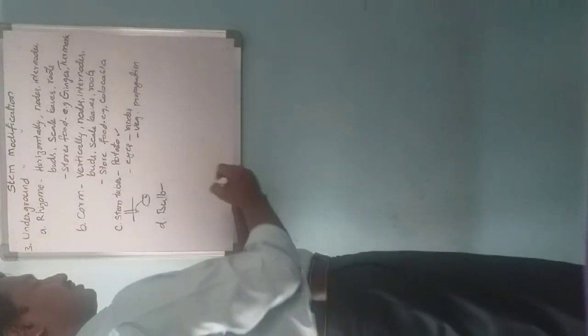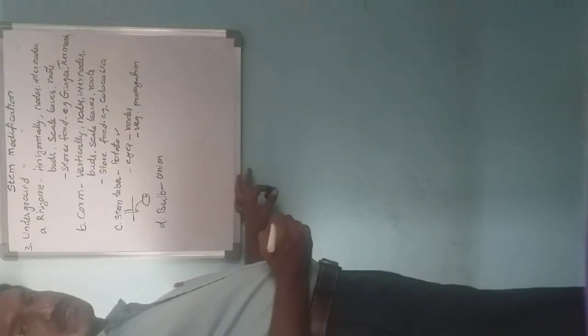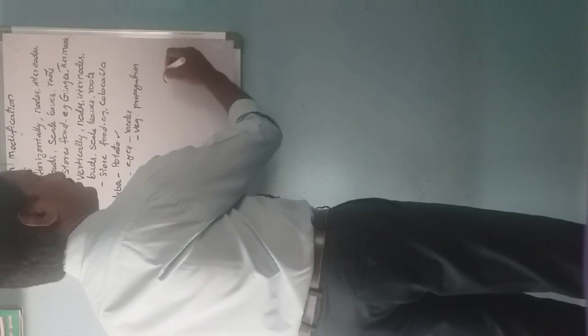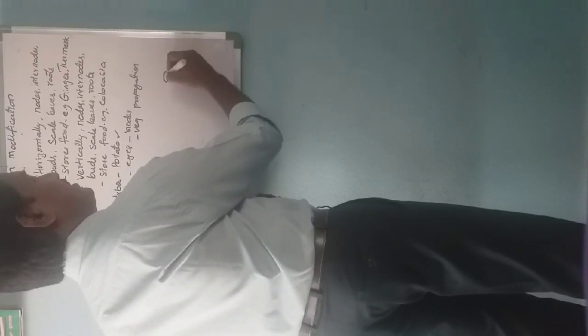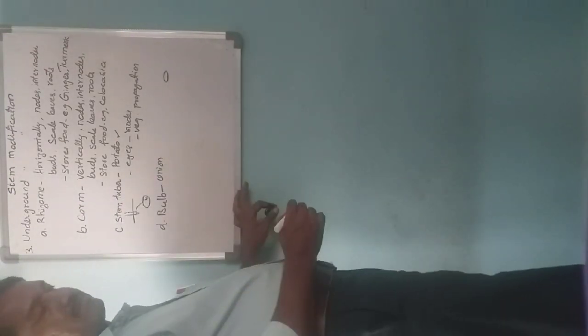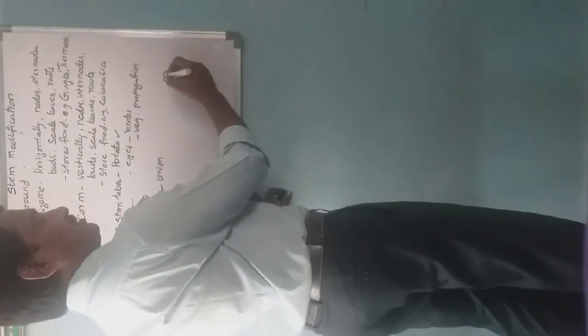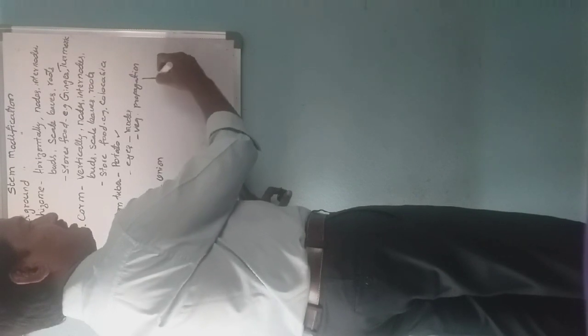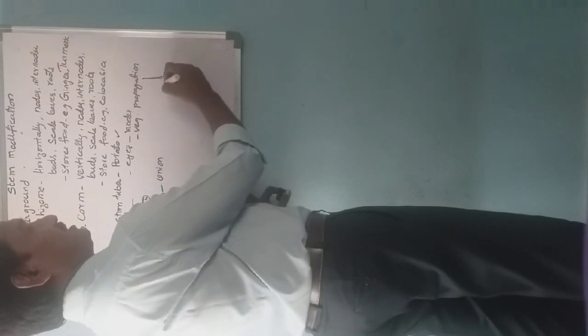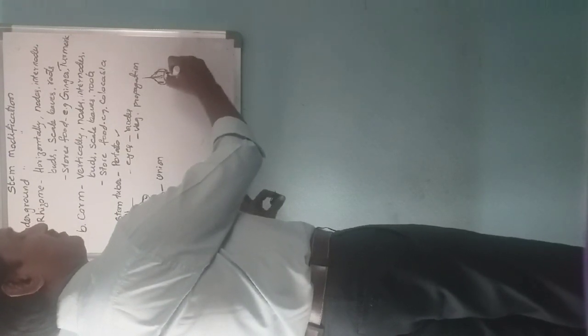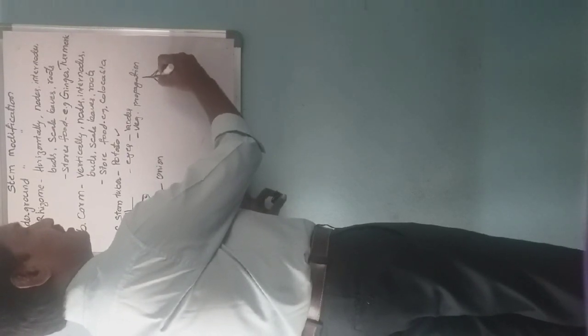The fourth type is bulb. Bulbs are observed in onion and garlic. In this type, the stem is condensed to a biconvex shape. Unlike the remaining three types, bulbs do not store food materials in the form of starch. Instead, the leaf bases store food materials and become fleshy. It contains axillary buds and also terminal buds. Examples are onion and garlic.